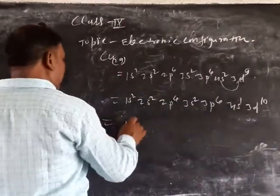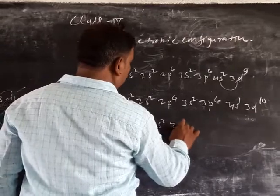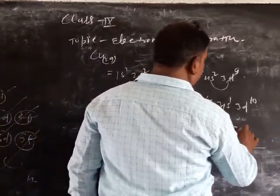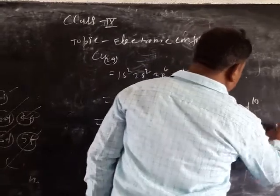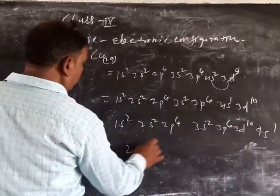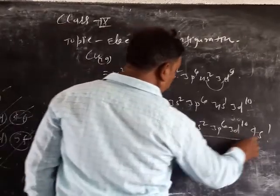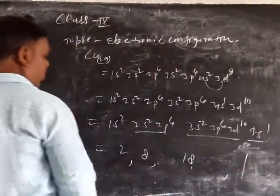So size: 1S2, 2S2, 2P6, 3S2, 3P6, 4S1. 3S2, 2P6, 3S2, 3P6, 3P10, 4S1. We have 2, 8, 15, 1. 2, 8, 15.